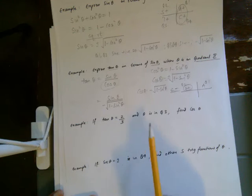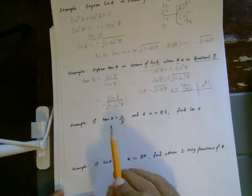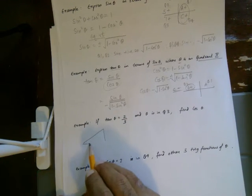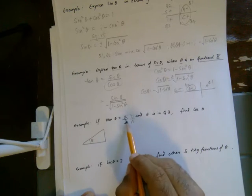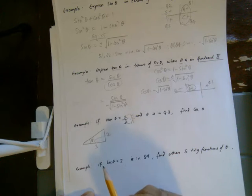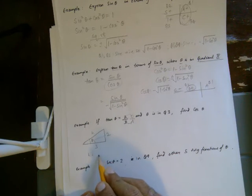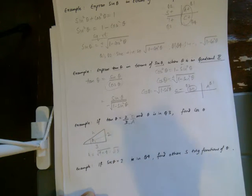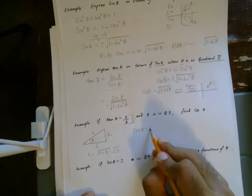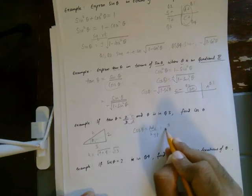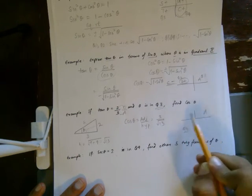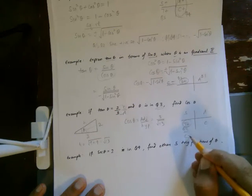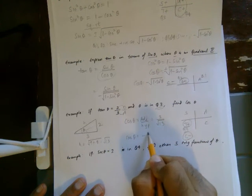If tan theta equals 2/3 and theta is in quadrant 3, find cosine theta. Given a trig ratio, we make a right triangle. Tangent is opposite over adjacent, so the opposite is 2 and the adjacent is 3. The hypotenuse is the square root of 9 plus 4, which is root 13. By definition, cosine theta is adjacent over hypotenuse, which is 3 over root 13. But in quadrant 3 using ASTC, tangent is positive and cosine is negative, so we add a negative sign: cosine theta equals negative 3 over root 13.